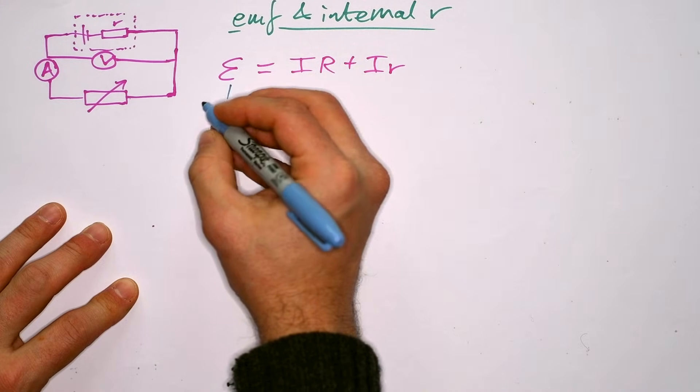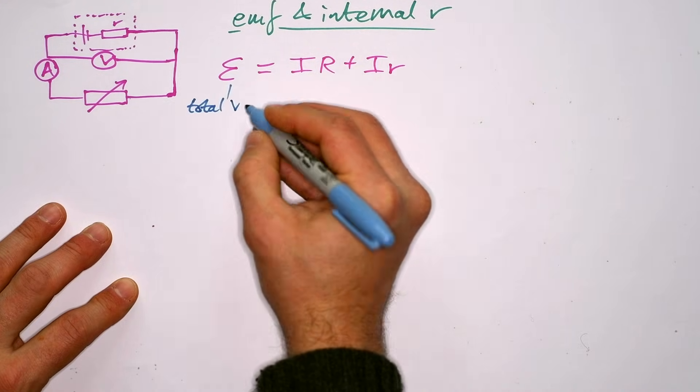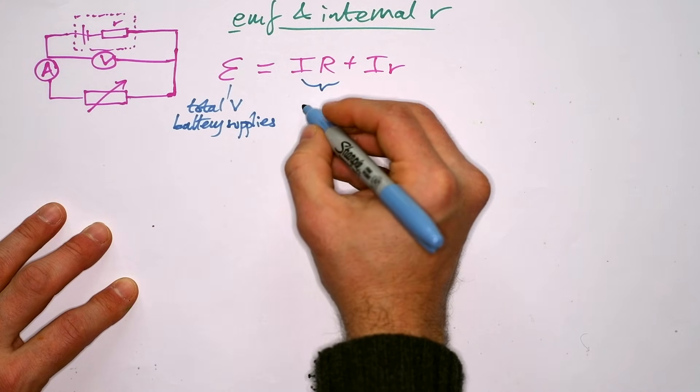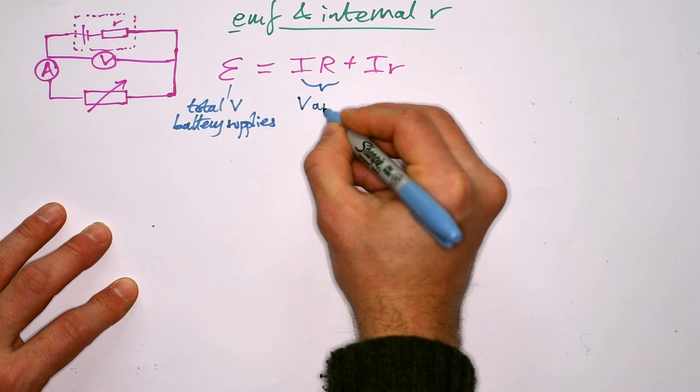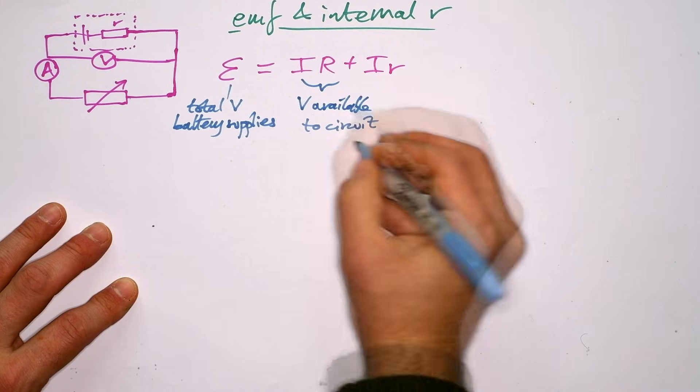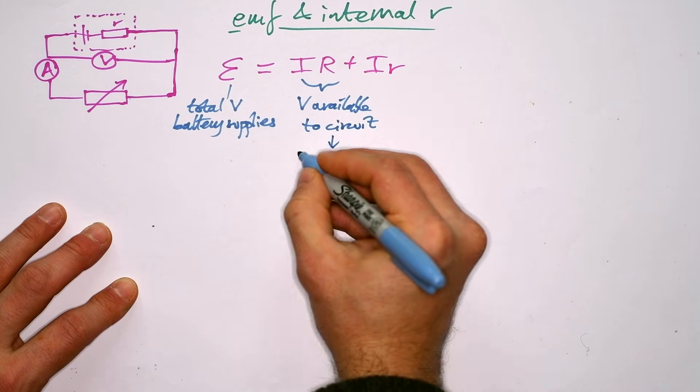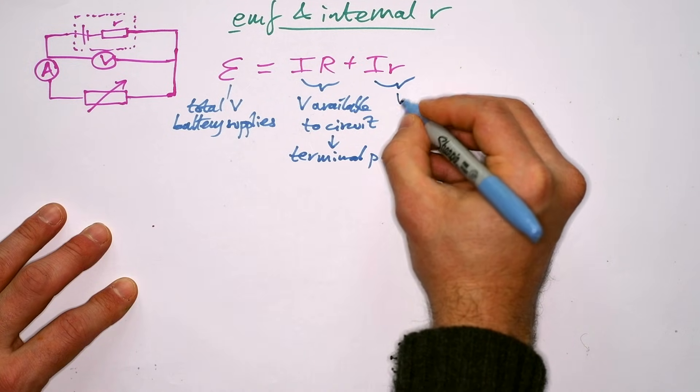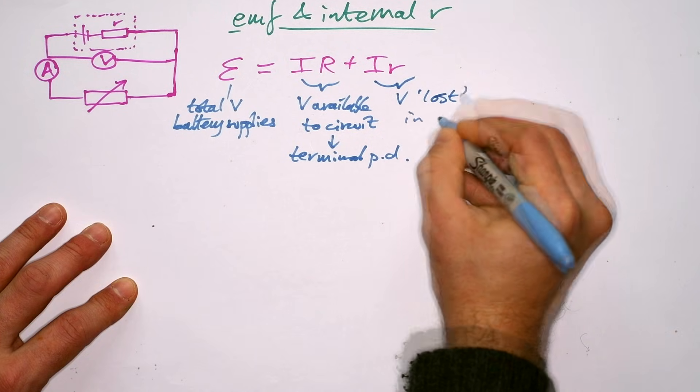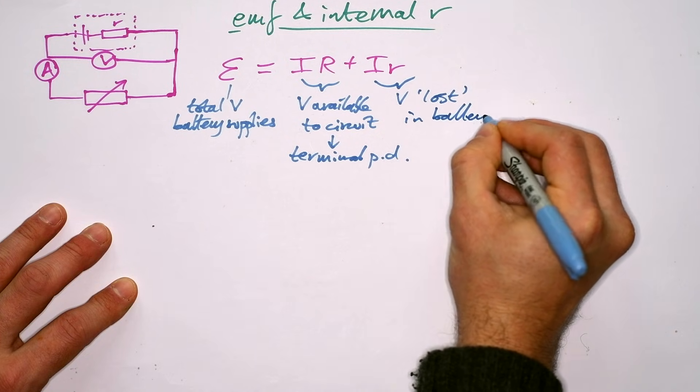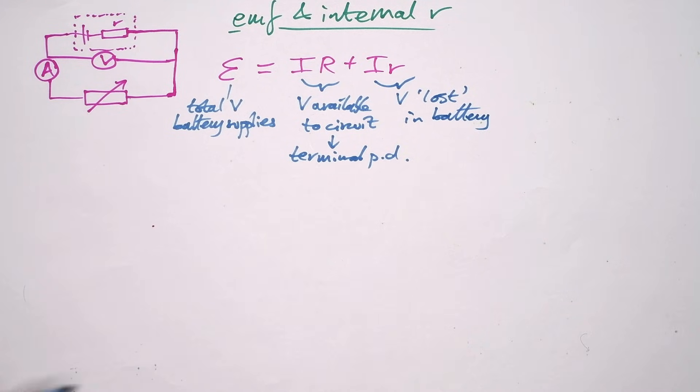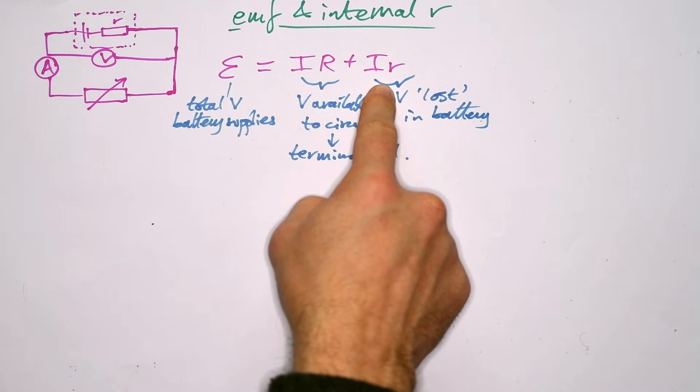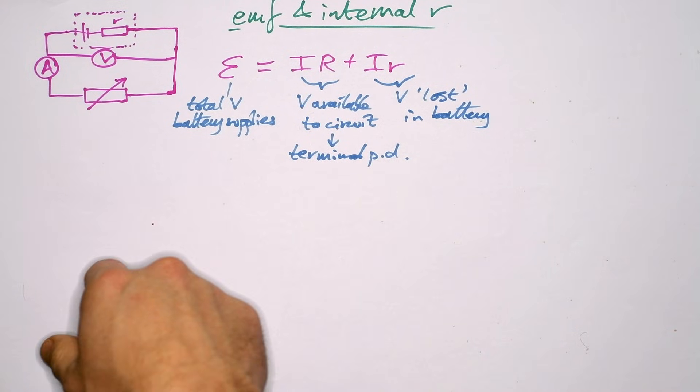In other words, EMF is the total voltage or PD battery supplies. IR is the voltage available to the circuit, and we also know that as a terminal PD because V equals IR, and then Ir again, but this is the V lost in the battery itself due to the internal resistance. That's all that means. It's just total PD equals the PD lost in the battery plus any leftover available to the circuit.